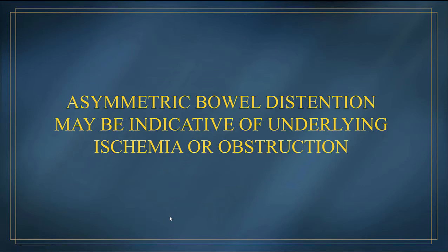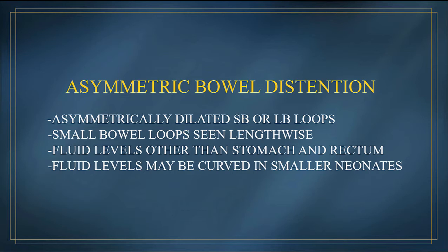I talked about symmetric or nonspecific bowel distension, and now I'm going to spend some time talking about asymmetric bowel distension, and then the remainder of this discussion will be about necrotizing enterocolitis. Asymmetric bowel distension, if present, may be a sign you're dealing with either a distal intestinal obstruction or bowel ischemia — and most commonly we're referring to necrotizing enterocolitis. The findings in asymmetric bowel distension are either larger loops in one portion of the abdomen than another, small bowel loops seen lengthwise, and fluid levels — which are not usually seen in nonspecific distension.